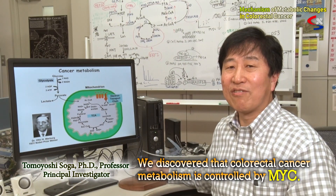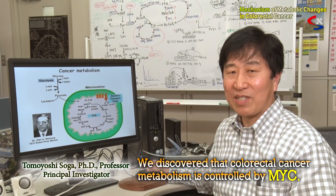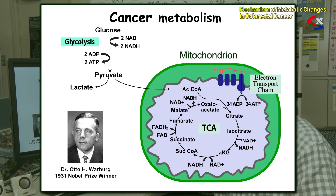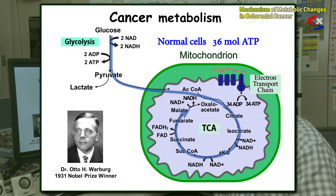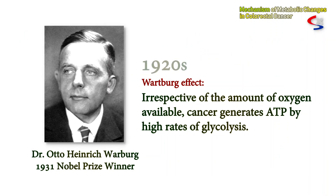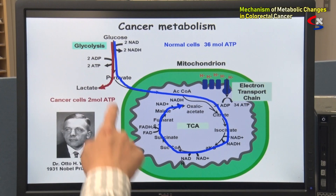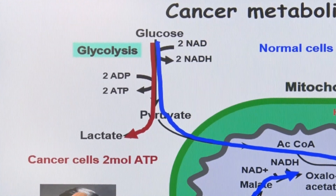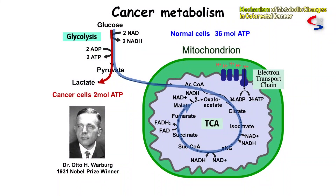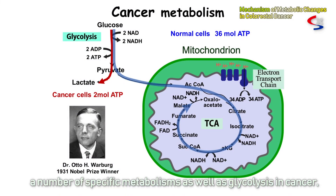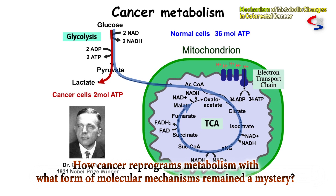We discovered that colorectal cancer metabolism is controlled by MYC. Let me give a brief introduction to cancer metabolism. As long as oxygen is available, cells in mammals normally use oxidative phosphorylation to generate ATP. However, in the 1920s, Otto Warburg declared that cancer is different — irrespective of the amount of oxygen available, cancer generates ATP by high rates of glycolysis. Although metabolic research in recent years has uncovered a number of specific metabolic mechanisms beyond glycolysis in cancer, how cancer reprograms metabolism through molecular mechanisms remained a mystery.